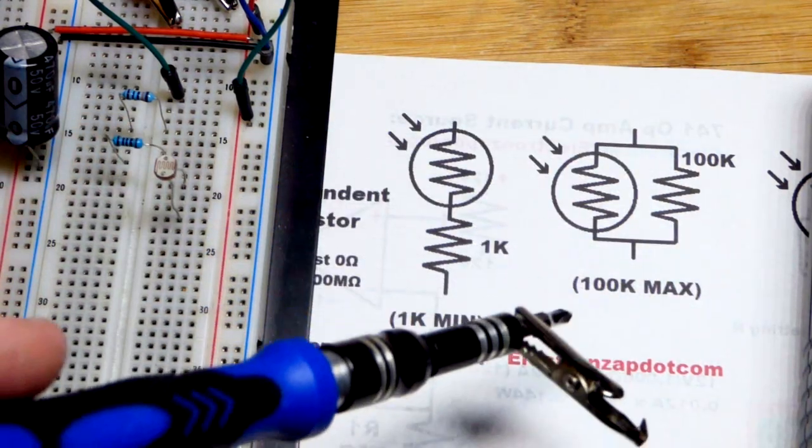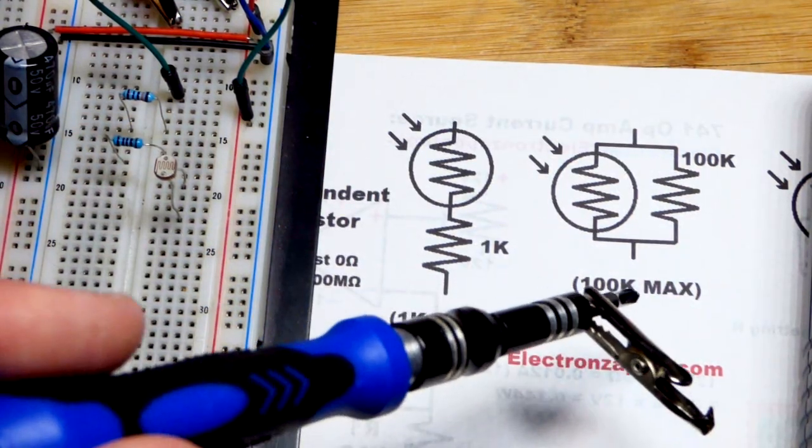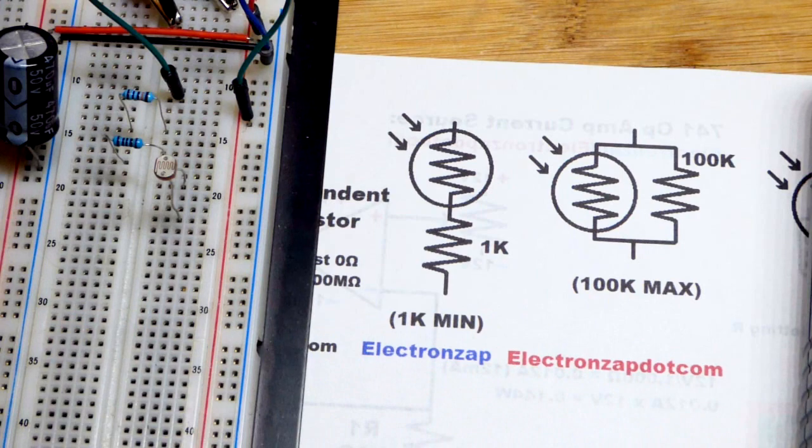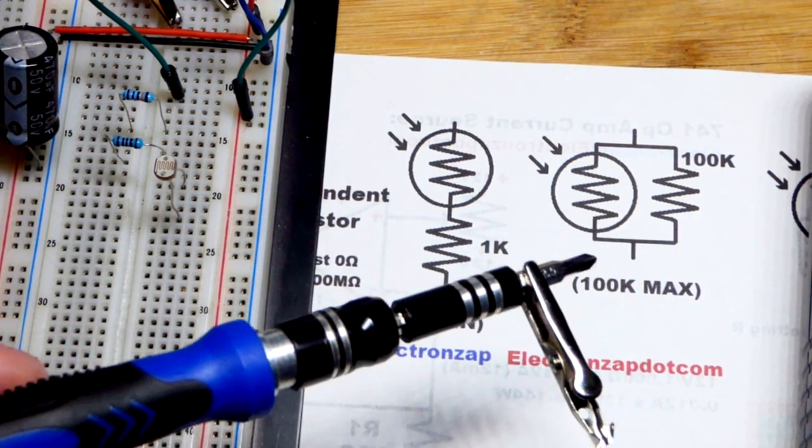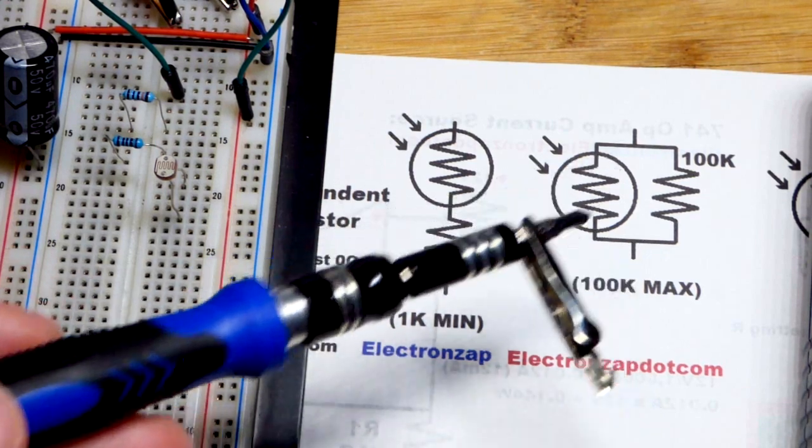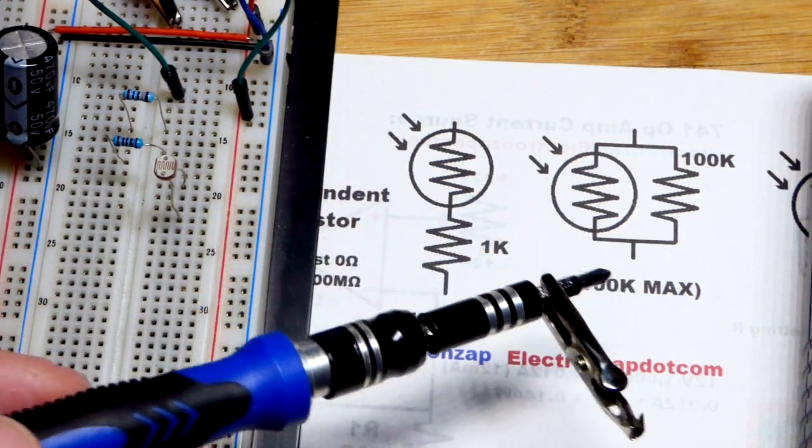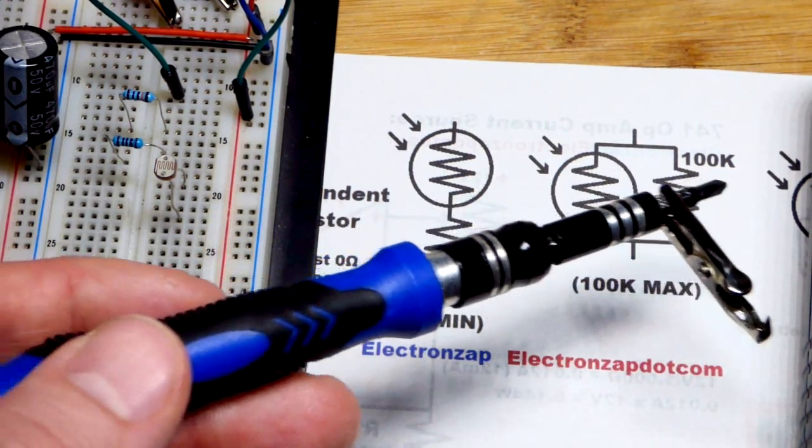We can also avoid going above 100 kilo ohms of resistance. So the exact resistance value will change, it'll always be lower than it would be with the light dependent resistor by itself but it will top off at 100k.